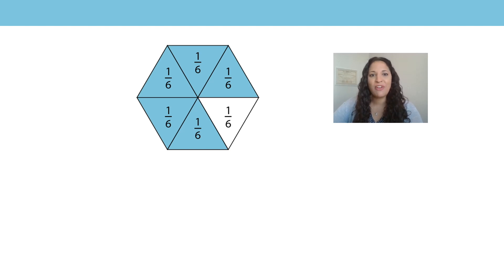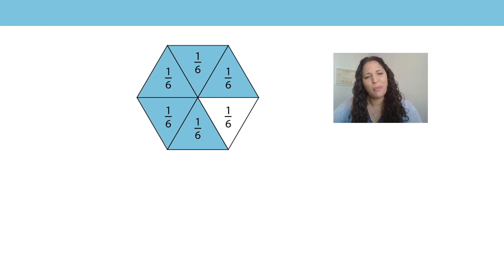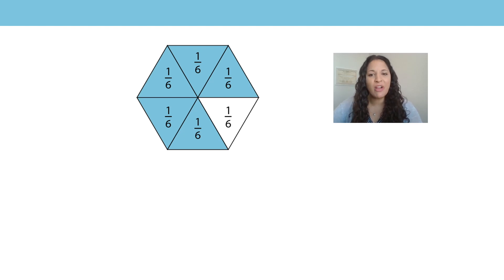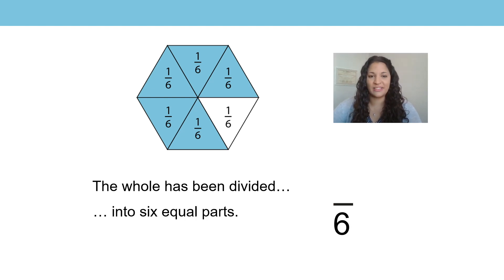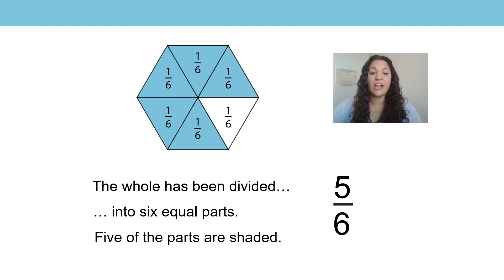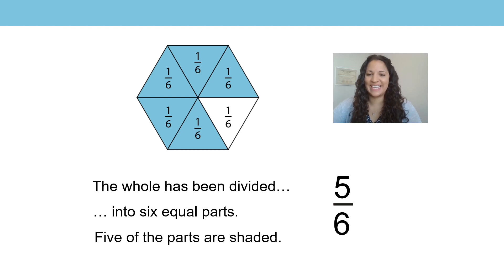Let's review how we write non-unit fractions. Look at the image on the screen. How many equal parts are there? How many are shaded? How would we write this as a fraction? The whole has been divided into 6 equal parts. 5 of the parts are shaded. That means that this image is showing us 5 sixths, and this is how we would write the fraction 5 sixths.